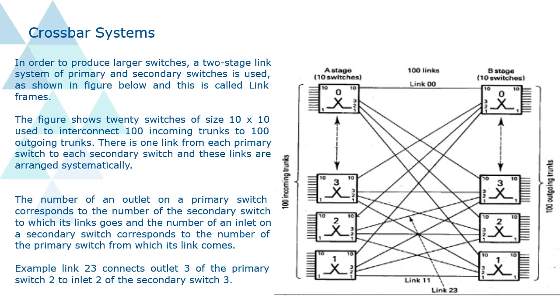There is one link from each primary switch to each secondary switch and these links are arranged systematically. The number of an outlet on a primary switch corresponds to the number of the secondary switch to which its links goes and the number of an inlet on a secondary switch corresponds to the number of the primary switch from which its link comes. Example link 23 connects outlet 3 of the primary switch 2 to inlet 2 of the secondary switch 3.